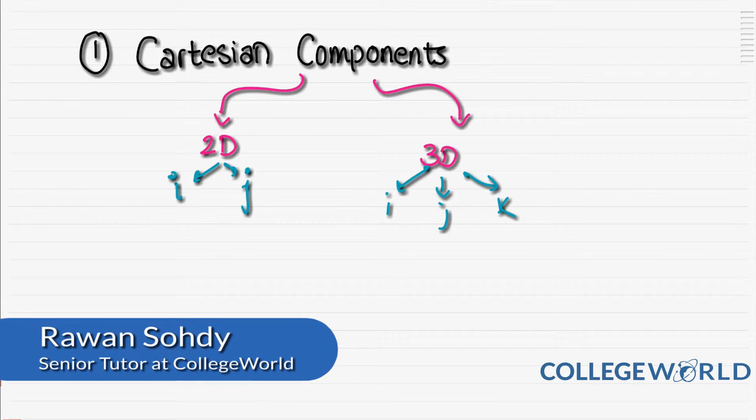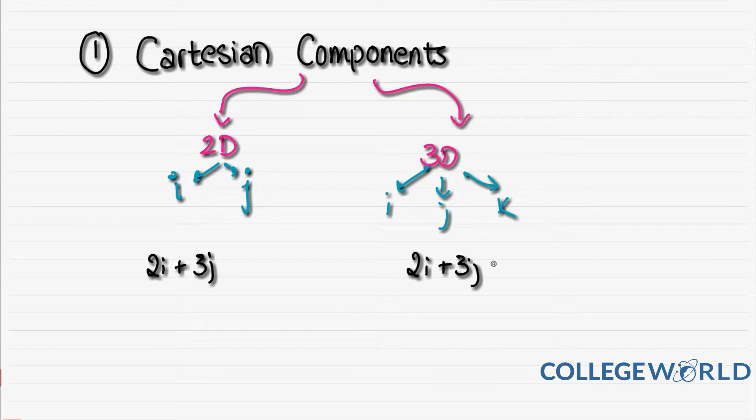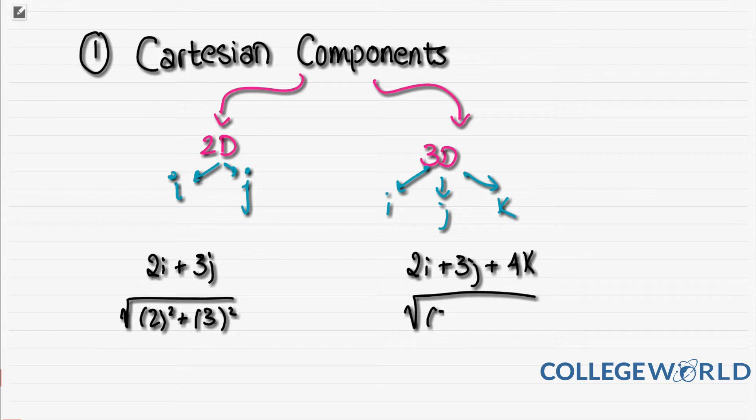When we want to write a vector, we say it's 2i plus 3j, or 2i plus 3j plus k. Please add the arrows, I'm just not going to do it now. If we want to find their modulus, we're going to find the square roots. Here the same thing, but we add the k factor. That sums up how we use Cartesian components.